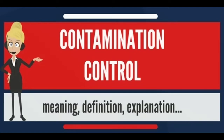Body movement causes contamination, and protective clothing such as hats, clean room suits and face masks are accordingly basic items of contamination control. Apart from people, another common way for contamination to enter is on the wheels of trolleys used to transport equipment. To prevent airborne contamination, high-efficiency particulate air (HEPA) filters, airlocks and clean room suits are used.